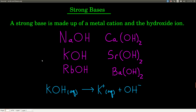A strong base — all you really need to know is that strong bases are made up of a metal cation and the hydroxide ion. These are the only strong bases you'll see, so you should know what they are. Looking at the periodic table: the alkali metals — sodium, potassium, and rubidium — with hydroxide give sodium hydroxide, potassium hydroxide, and rubidium hydroxide as strong bases. And in the alkaline earth metals, the second column, calcium, strontium, and barium hydroxides are also strong bases.